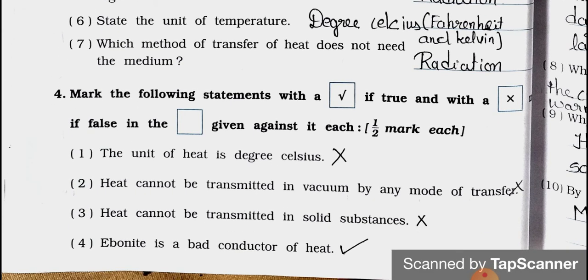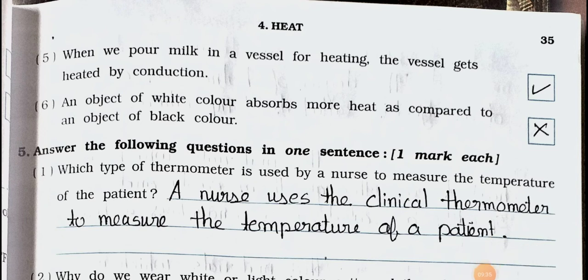Now see Main 4. Mark the following statements with a right if true and with a wrong mark if false in the box given against each. Half mark each. Number 1: The unit of heat is degree Celsius. It's false, wrong. Number 2: Heat cannot be transmitted in vacuum by any mode of transfer. Wrong, false. Number 3: Heat cannot be transmitted in solid substance. Wrong, false. Number 4: Ebonite is a bad conductor of heat. It's true. Number 5: When we pour milk in a vessel for heating, the vessel gets heated by conduction. It's true, right. Number 6: An object of white color absorbs more heat as compared to an object of black color. It's false, wrong.